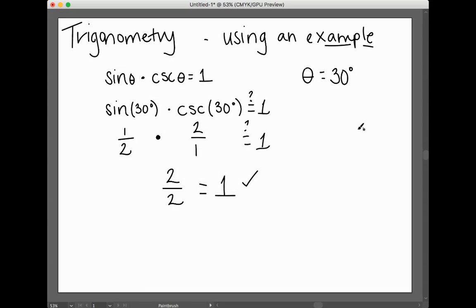So therefore, by example, I've shown that when theta is 30, the sine of 30 times the cosecant of 30 equals one.